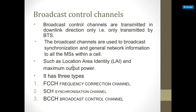FCCH, the frequency correction channel, occupies the very first time slot and is repeated every 10 frames. It allows subscribers to synchronize their internal frequency to the exact frequency of the base station. SCH, the synchronization channel, occupies the slot immediately after the FCCH and is used to identify the serving base station, frame-synchronize each mobile with the base station, with frame numbers ranging from 0 to 2,715,647.